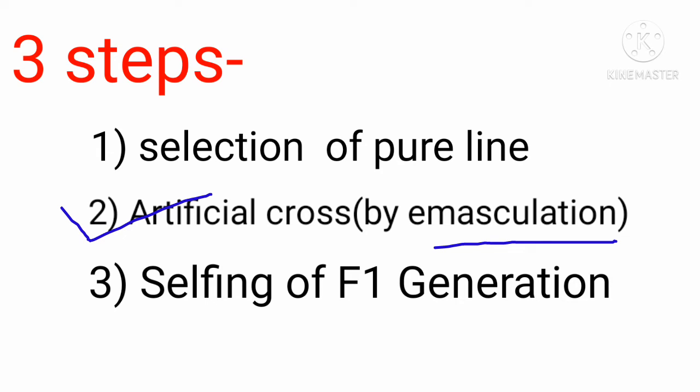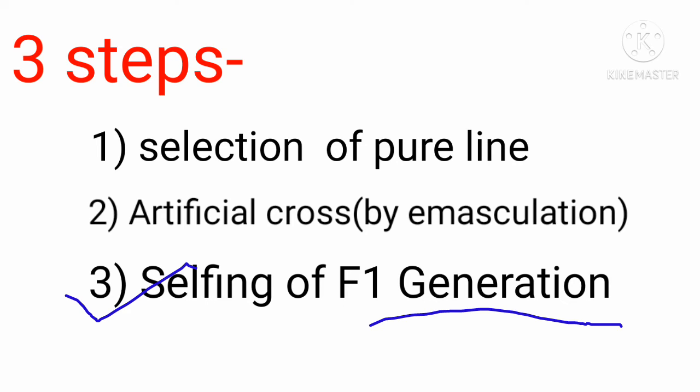The second step is the artificial cross. He dusted pollen grains from the flower of the pure male parent on the stigma of an emasculated flower of the female parent. In due course, fruits were formed and he opened all the pods and collected seeds. All seeds of the F1 generation were yellow and round, as expected — confirming yellow is dominant over green, and round is dominant over wrinkled.